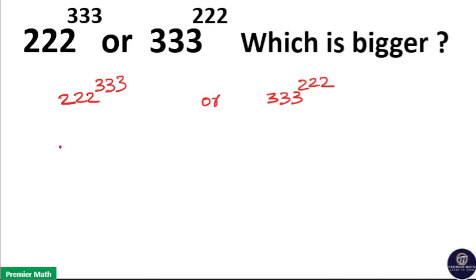Now this can be written as 2 into 111 raised to 3 into 111. Now 2 cube is equal to 8 and remaining power of 2 is 111. Write it. Again remaining base is 111 and power of 111 is 333.